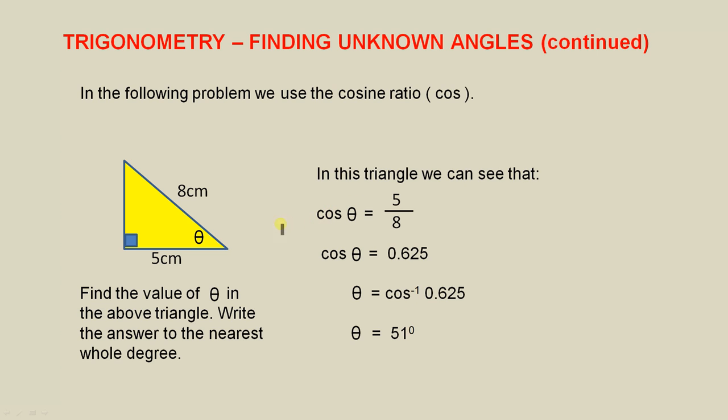In the next problem we're given theta. We have to find what that angle is. But we have the adjacent and the hypotenuse. So in this problem we use the cosine ratio or cos. And we have to find the degree to the nearest whole degree.